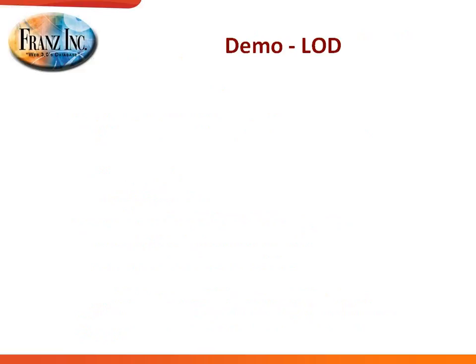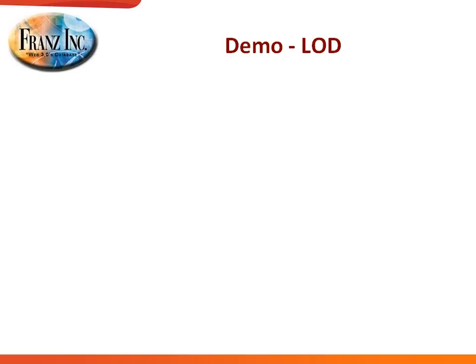Instead of just talking about triples and graph databases, it's much more illuminating to talk about examples and give a demo. This demo is based on the Linked Open Data cloud — where people put databases on the web and publish them as triples. In 2007 there were already several databases expressed as triples: DBpedia is the RDF version of Wikipedia, and Geonames is a database of 7 million places on Earth with latitudes and longitudes — all linked together.